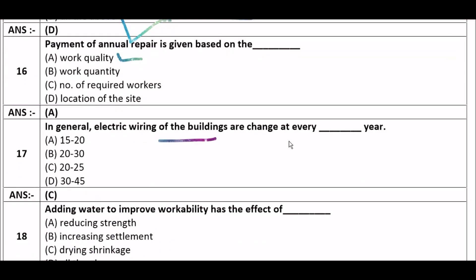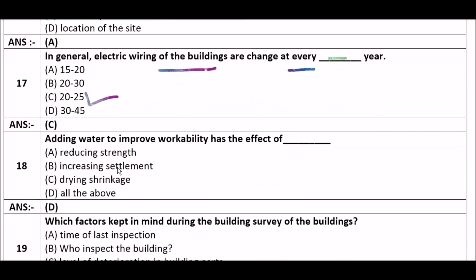Next question: In general, electric wiring of buildings is changed at every — option A: 15 to 20 years, option B: 20 to 30 years, option C: 20 to 25 years, option D: 30 to 45 years. The right answer is option C, 20 to 25 years. In general, electric wiring of buildings is changed at every 20 to 25 years.